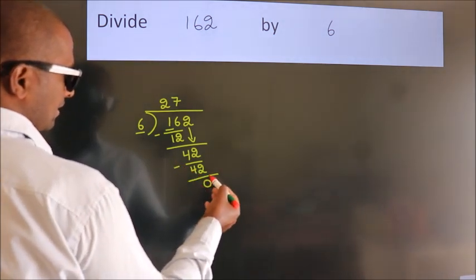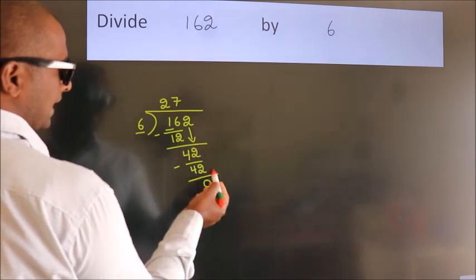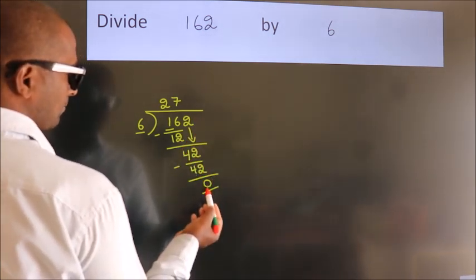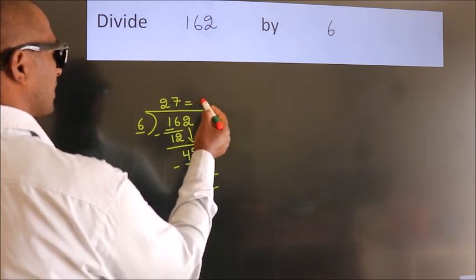After this, no more numbers to bring it down and we got remainder 0. So this is our quotient.